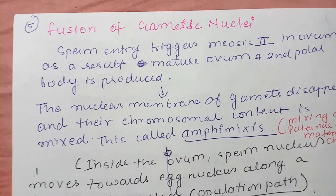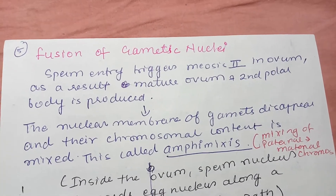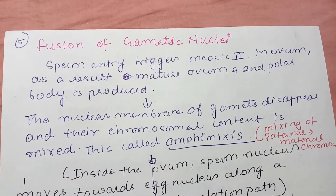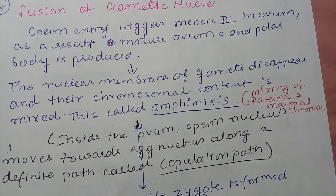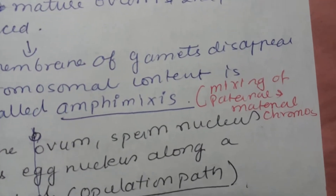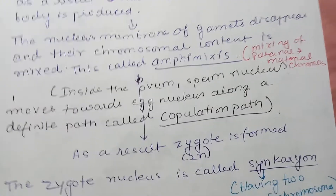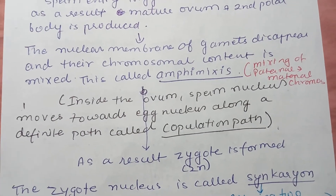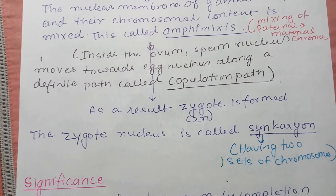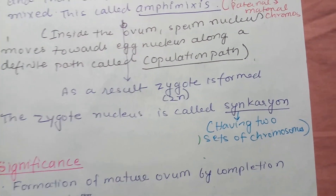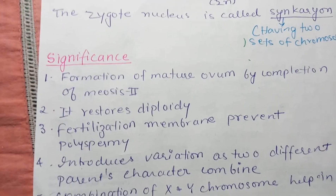Once the sperm nucleus enters, it triggers meiosis two in the ovum, resulting in the mature ovum and second polar body. The nuclear membranes of the gametes disappear and their chromosomal content is mixed — this is called amphimixis, meaning mixing of paternal and maternal chromosomes. Inside the ovum, the sperm nucleus moves toward the egg nucleus along a definite path called the copulation path. As a result, the zygote is formed; its nucleus is called a synkaryon, having two sets of chromosomes, one maternal and one paternal.